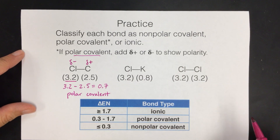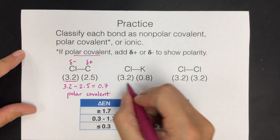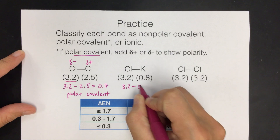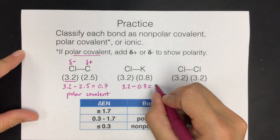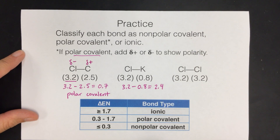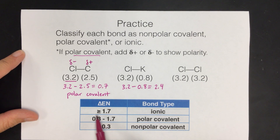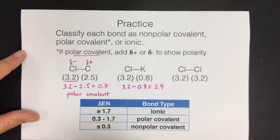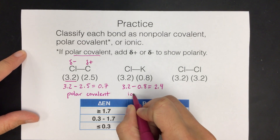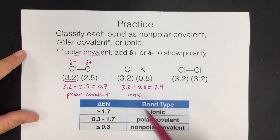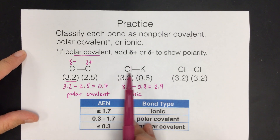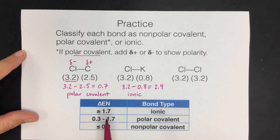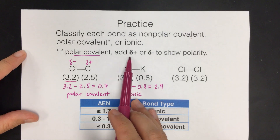The second one is chlorine paired with potassium. Again, we're given the electronegativity values. Always start with the bigger number and subtract the smaller: 3.2 minus 0.8 gives us a difference of 2.4. We find where 2.4 fits — it's bigger than 1.7. So chlorine is way more electronegative than potassium; it's just going to rip the electrons away, making this an ionic bond.